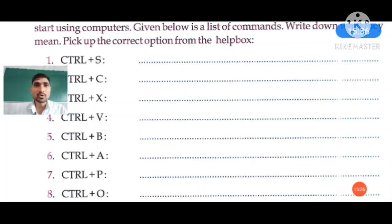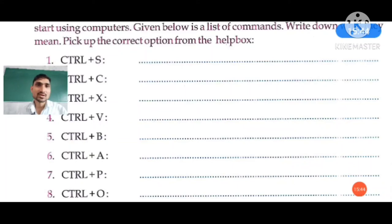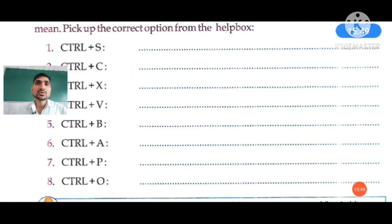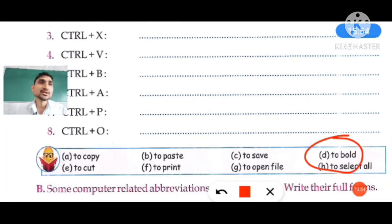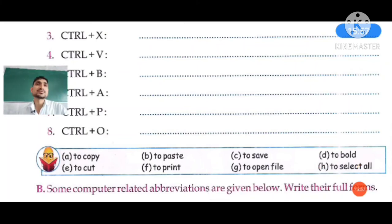Question five: Ctrl+B. When you select any word and want to make it bold, the shortcut key is Control+B. The selected word or sentence will change to bold. Choose option D from the help box.